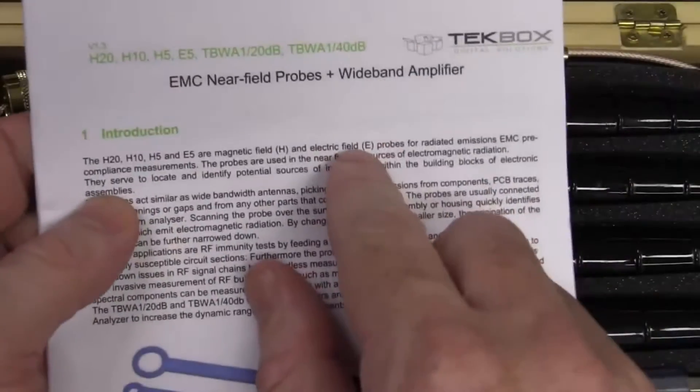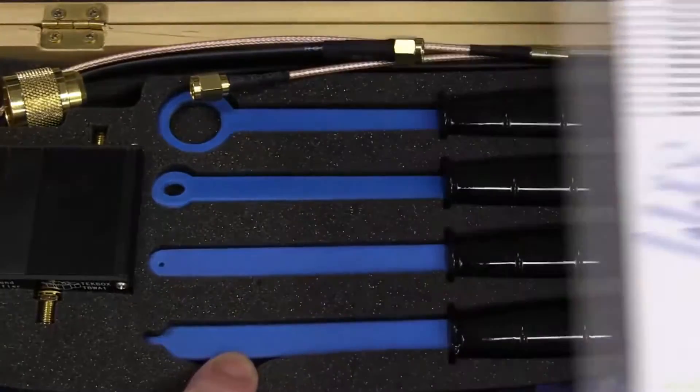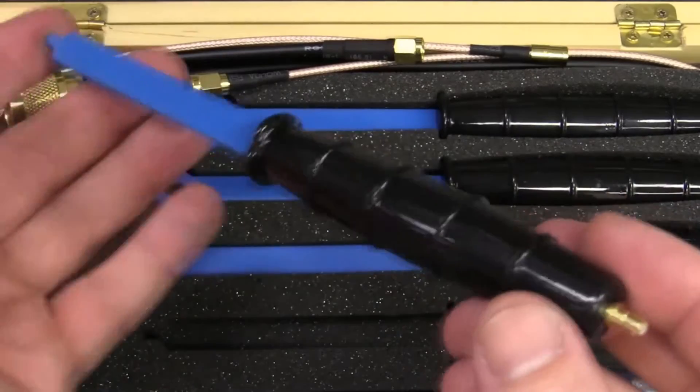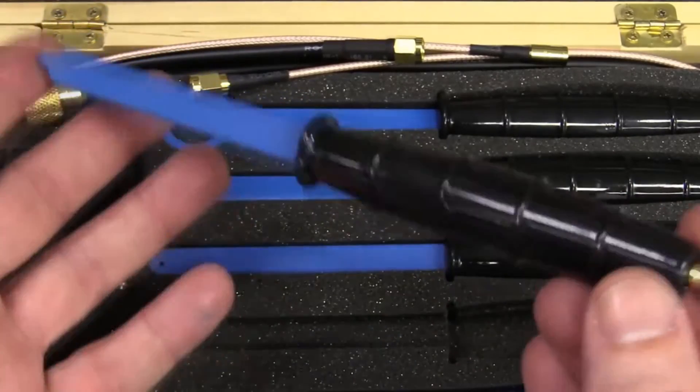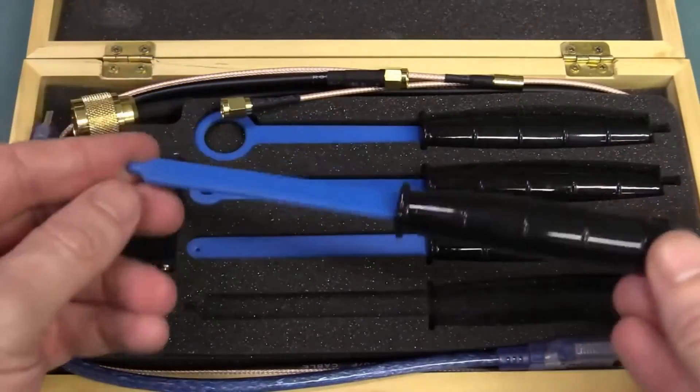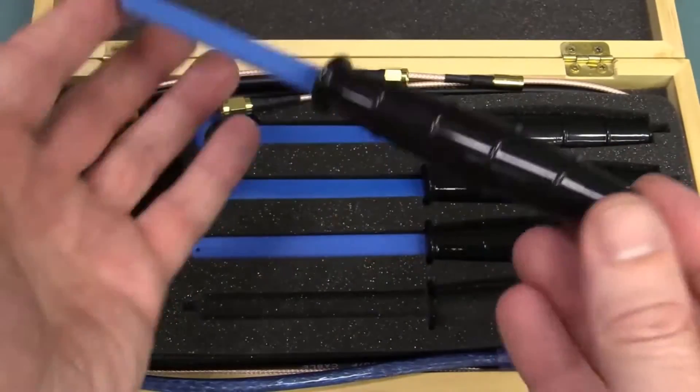Yeah, H and E-field. Okay, so yes, the smaller one must be the E-field probe, because there's two types of measurements you can do with these things. H-field, which is your magnetic field measurements, and E-field, E for electric, of course.